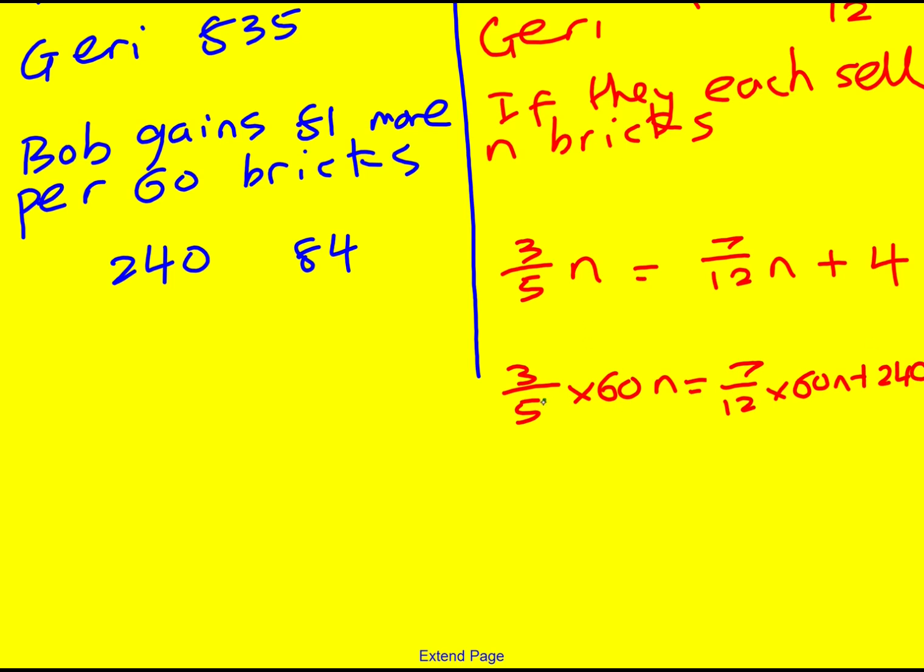Okay, the 60 and the 5 partially cancel because 60 divided by 5 is 12, and I'm left with 3 times 12n or 36n. The 60 divided by 12 partially cancels, leaving me 7 times 5. So 36n is 35n plus 240. And from that I just minus 35n, giving me n is 240.